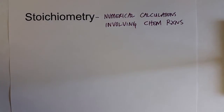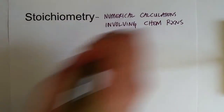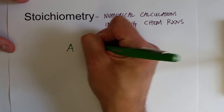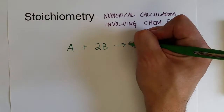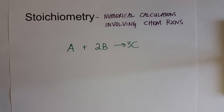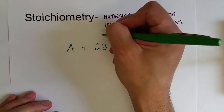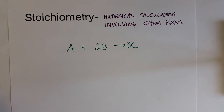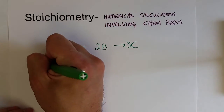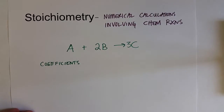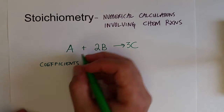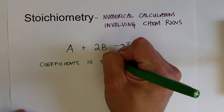Let's think of a generic reaction: A plus 2B produces 3C. That's our balanced chemical equation, and these numbers are coefficients. What these coefficients tell us is the relationship. When balancing chemical reactions, we often count atoms, but we can also say moles, because moles is a collection term for atoms. So coefficients represent a molar relationship between reactants and products.